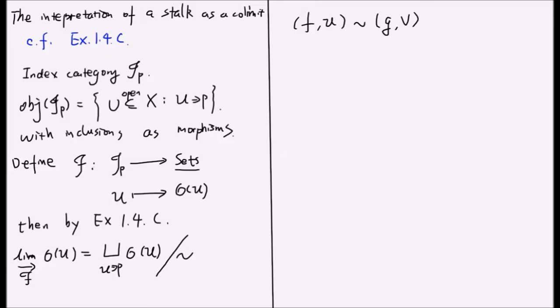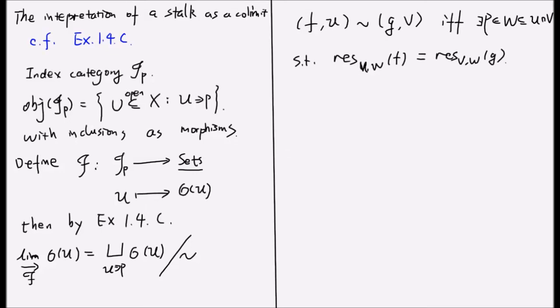if and only if there exists a W containing p and contained in U ∩ V, such that the restriction of f to W is equal to the restriction of g to W. So now, by the definition of stalks, we see this is precisely the definition of a stalk at p. So we are done.